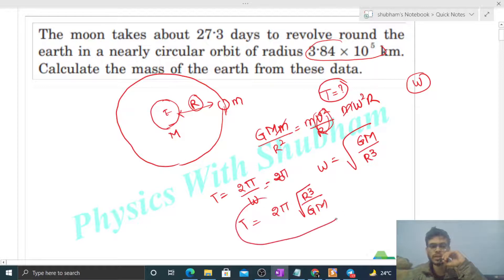Now if we put values here, time period value we know is 27.3 days, r value we know is given, and g value we know. What we want to find out is the value of capital M, the mass of the earth.